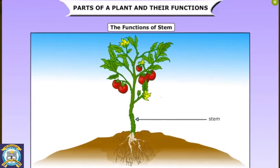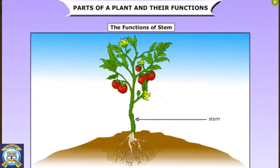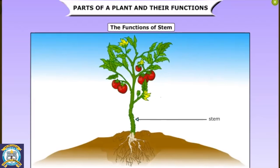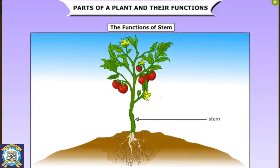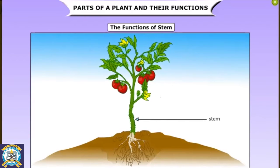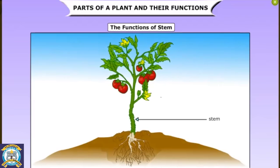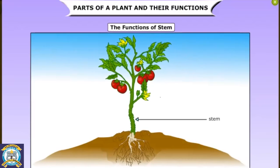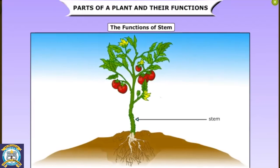The stem is the main part of the shoot system. It supports branches, leaves, buds, flowers, and fruits. The stem has hollow tubes through which it carries water and mineral salts from the roots to the leaves where food is produced. Again, it carries the food prepared by the leaves to other parts of the plant. It is thus like a two-way highway, carrying materials both ways.